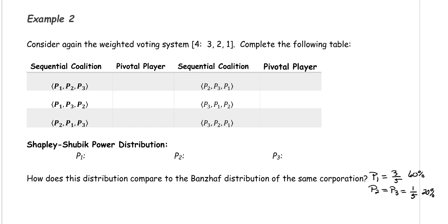Example 2. Consider again the weighted voting system with a quota of 4. The weights of the players are 3, 2, and 1. We're going to complete the table so that we can compute the Shapley-Shubik power distribution, and we had computed this using the Banzhaf power distribution in an earlier video.